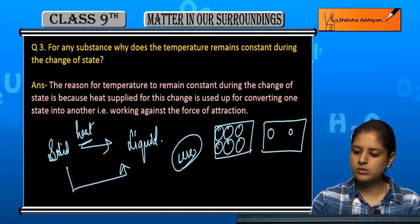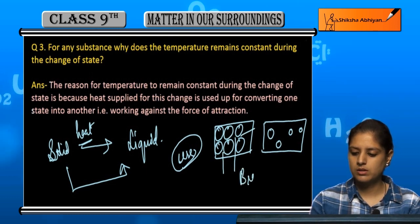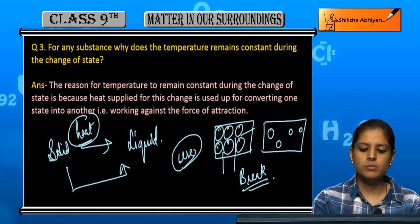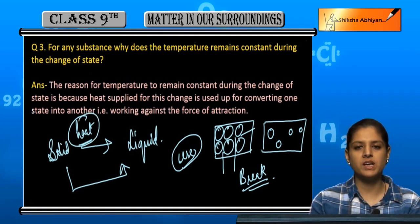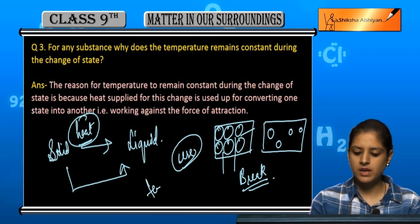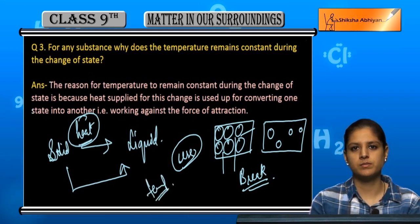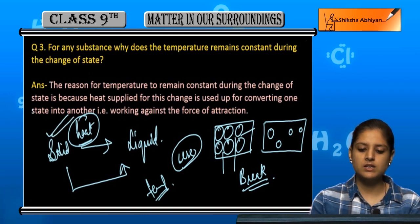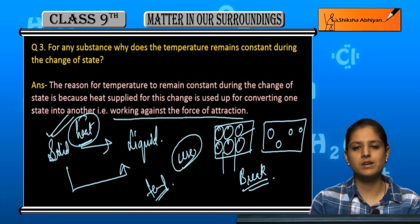Uske solid ki jo particles hain, agar yeh solid hai, uske particles aise closely packed hote hain. Aur usko liquid mein change karne ke liye thodi door door honge. So in ke beech ki jo forces hain, yeh break karni hain. So yeh jo heat hamne provide ki hai, wo saari in forces ko break karne mein use ho jati hai, and isi wajah se jo temperature hai wo increase nahi hota, constant rehta hai — because yeh heat is used up in working against the force of attraction.